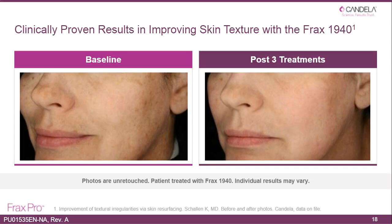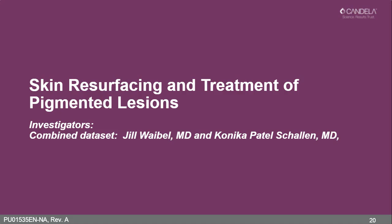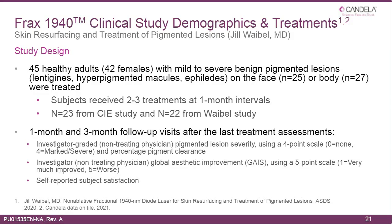The bottom line is what we can do with this laser: improve skin texture and pigmented lesions. Our study on pigmented lesions with Dr. Weibel enrolled 45 healthy adults — 42 women, 3 men — with mild to severe benign pigmented lesions including lentigines, hyperpigmented macules, and seborrheic keratoses on the face or body. Subjects received two to three treatments at one-month intervals, with follow-up at one and three months after the last treatment. Assessment used investigator-graded scales of pigmented lesion severity on a four-point scale, percentage of pigment clearance, global assessment scores, and patient satisfaction.